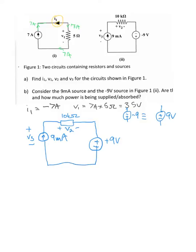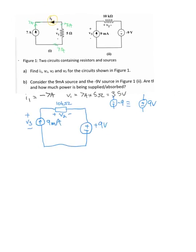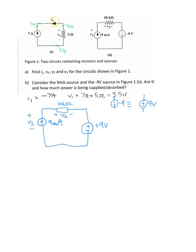The first thing we have to work out is V2, and again we can just use Ohm's law. We know that there's a current of nine milliamps flowing, so by Ohm's law V2 is equal to nine milliamps times 10 kilo-ohms. That's equal to 9 × 10⁻³ times 10 × 10³, which is equal to 90 volts.